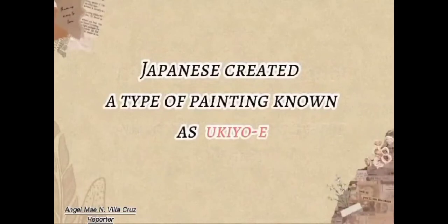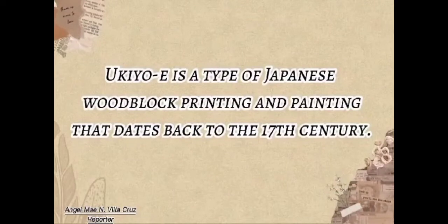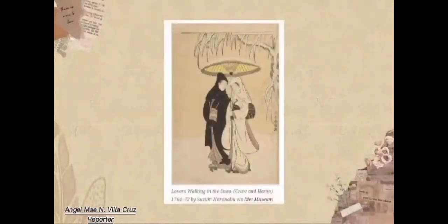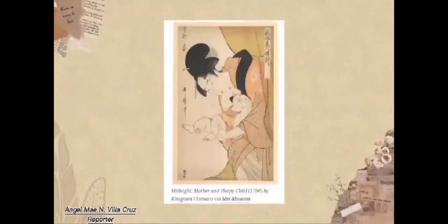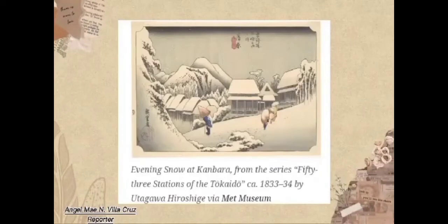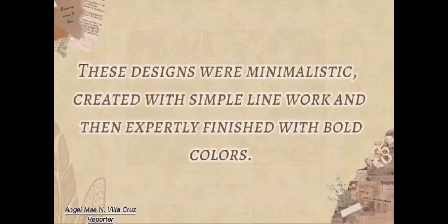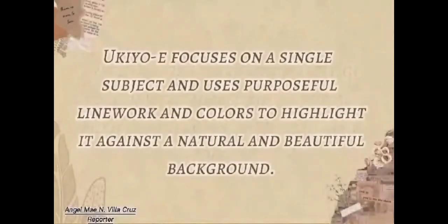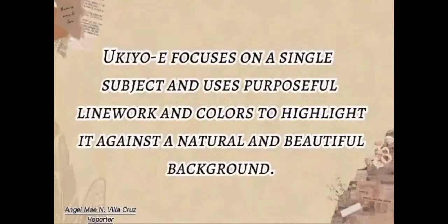The Japanese also created a type of painting known as ukiyo-e. Ukiyo-e is a type of Japanese woodblock printing and painting that dates back to the 17th century. This new art style departed from the traditional hyper-realistic artwork that many artists aspired to at that time. These designs were minimalistic, created with simple linework, and then expertly finished with bold colors. Ukiyo-e focuses on a single subject and uses purposeful linework and colors to highlight it against a natural and beautiful background.